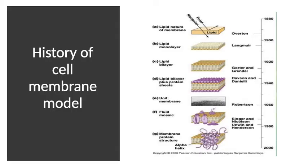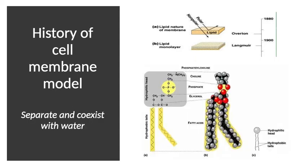This is the timeline of the history of the cell membrane from the beginning until the latest discovery around year 2000. It started in 1880 with Overton. We will look at each important event in the history of the cell membrane related to its functions and features. The first feature to be fulfilled is the ability to separate and coexist with water.